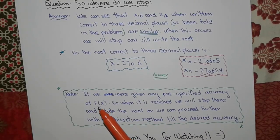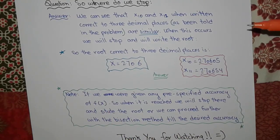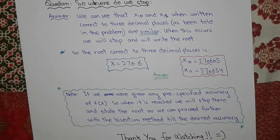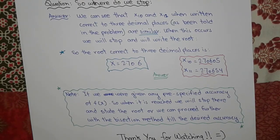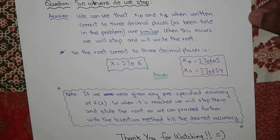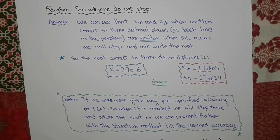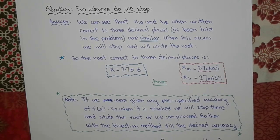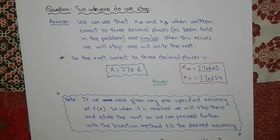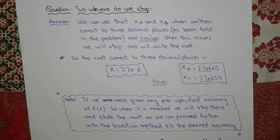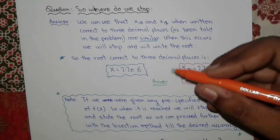A note: if we are given a pre-specified accuracy for f(x), say 10⁻³ or 10⁻⁴, we stop when that accuracy is reached and state the root. Alternatively, we can proceed further with the bisection method until the desired accuracy is achieved.